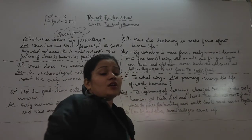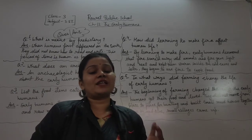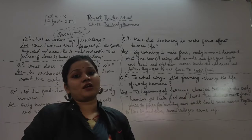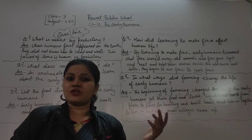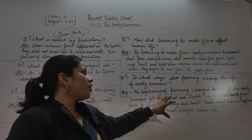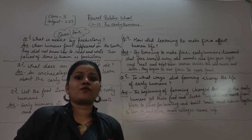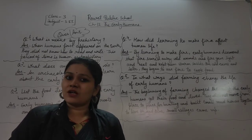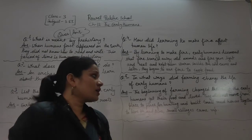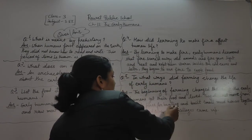Food gathering ka tarika badal gaya tha, aur rehne ka tarika bhi badal gaya tha. Food gather karne ke liye woh idhar udhar jaate the, ab woh idhar udhar jaana band ho gaye — kyunki farming aa gayi thi. They grew different types of food, and their first crops were wheat and barley — gehun aur jau. They did not move from place to place for hunting anymore.